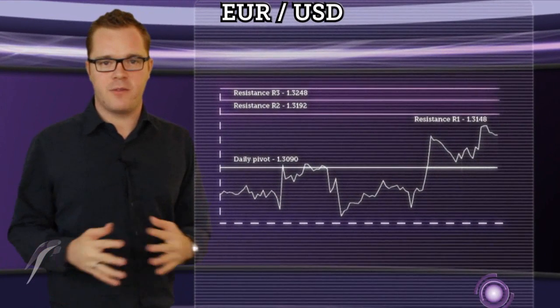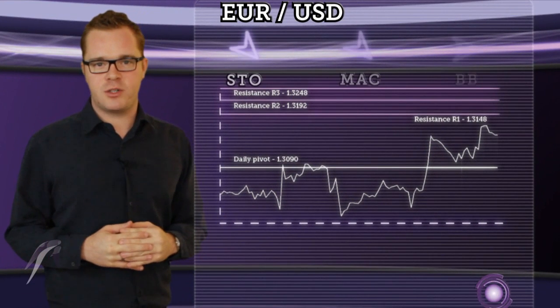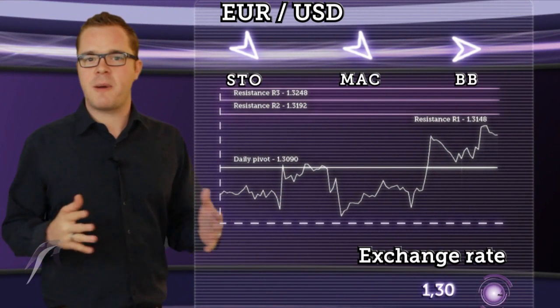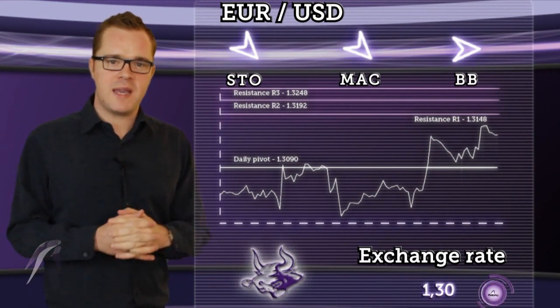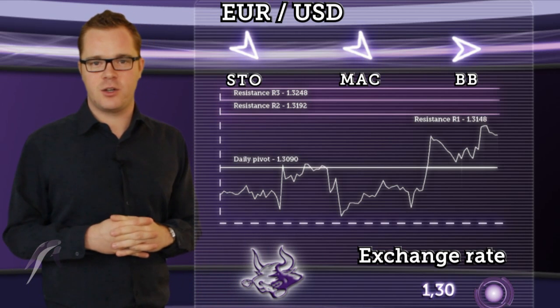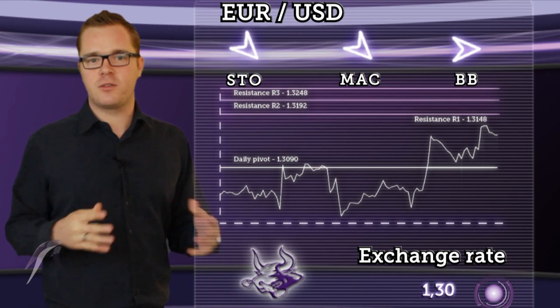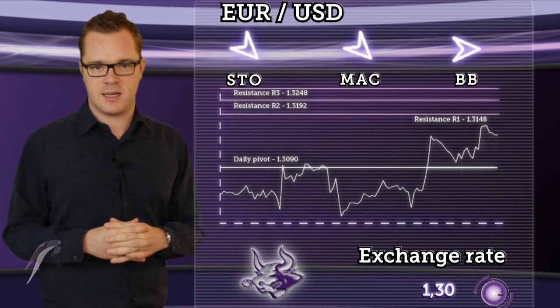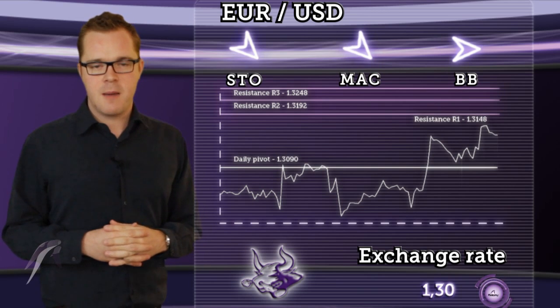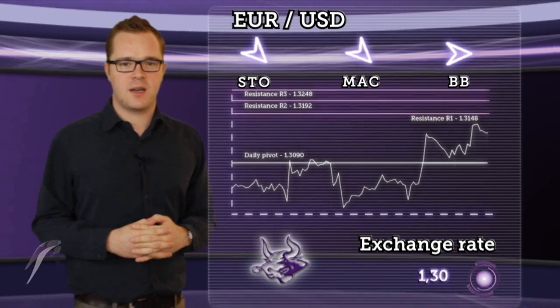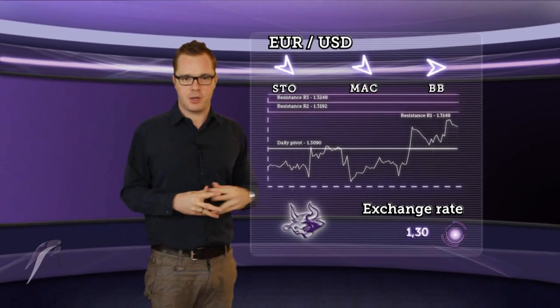It's rising above the daily pivot and now approaching resistance R1. A rise above this level will indicate the next objective at R2, and a further rise towards R3 resistance isn't excluded. Based on the conclusions for each indicator, we're expecting a bullish trend.